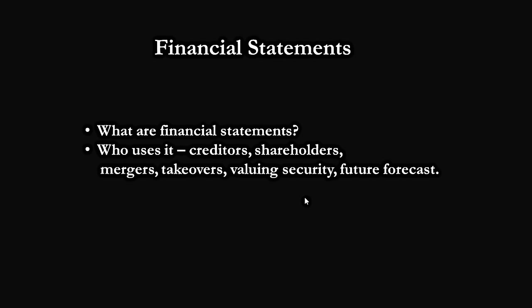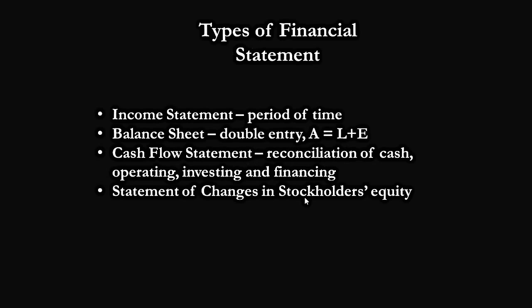There are different types of financial statements. The first one is the income statement, which portrays the performance — profit and loss — of a company over a period of time. This is also known as the P&L statement or the income and expenses statement.